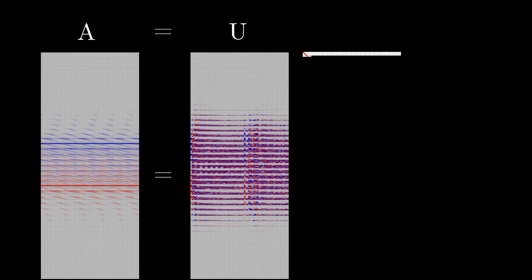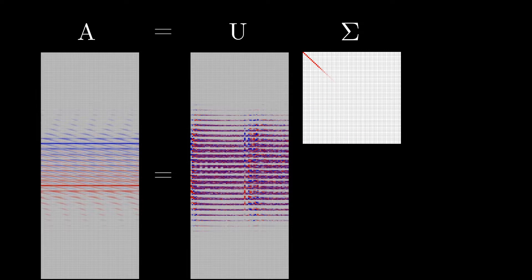The second matrix, sigma, is a diagonal matrix, and each one of its diagonal entries represents the square root of the energy of the data along the corresponding singular vector.